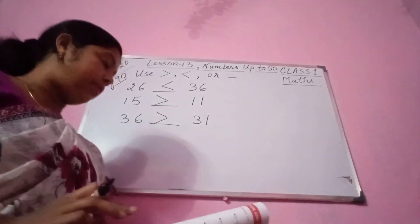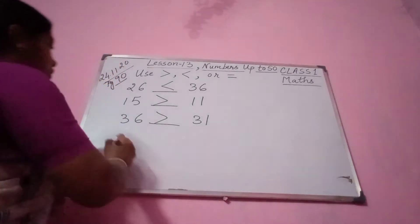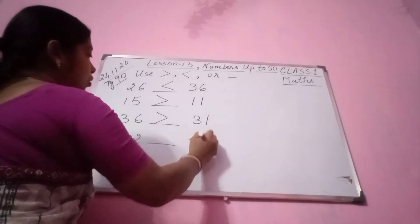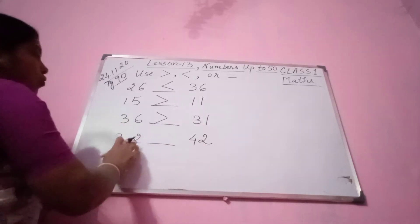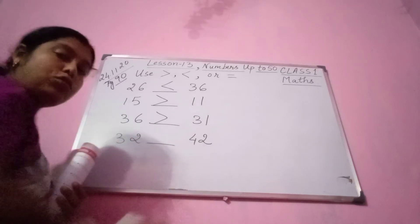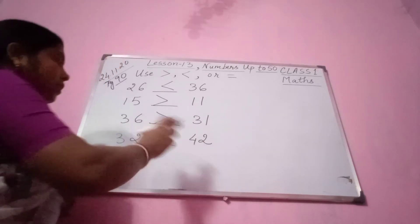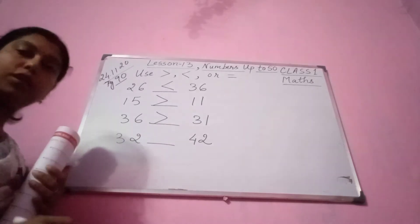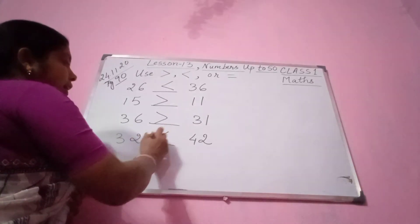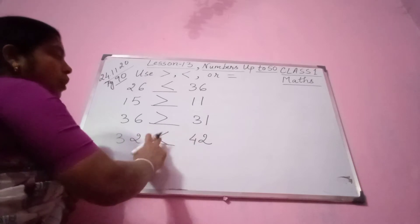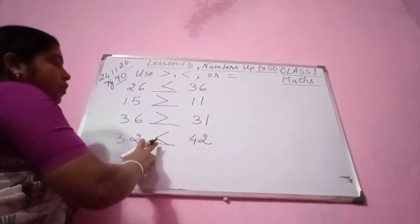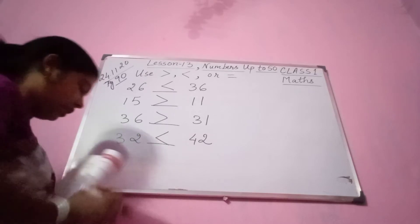Next number — 32 and 42. 32 is 3 tens, 2 ones; 42 is 4 tens, 2 ones. So 42 is bigger than 32. So you put this sign — 32 is smaller than 42. So we are putting the smaller sign.